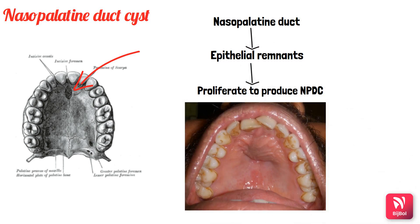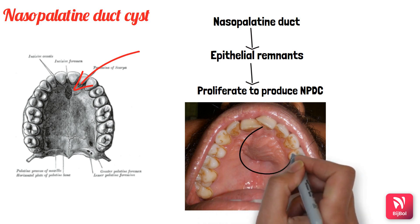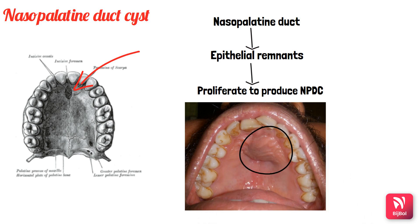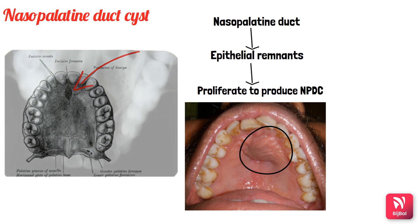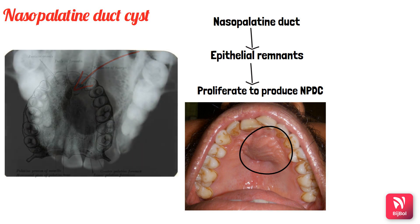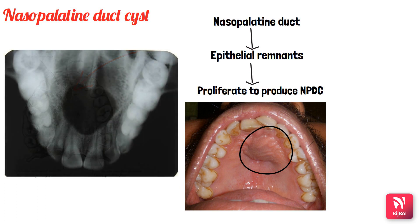Clinically, this picture of a nasopalatine duct cyst shows swelling in the midline of the anterior maxilla. Sometimes it presents with pain, and if the cyst is growing larger, large cysts may erode the labial and palatal bone, resulting in a fluctuant swelling.